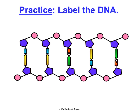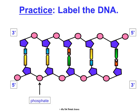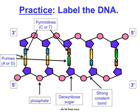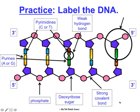Take a few minutes to label the DNA in your notes, then we'll go through it together. The 3' end has a sugar on it; the 5' end has a phosphate. The strong covalent bonds run along the backbone. The bigger nitrogen bases in the middle are purines — adenine and guanine. The smaller ones are pyrimidines — cytosine or thymine. They're held together by weak hydrogen bonds. One complete unit of phosphate, sugar, and nitrogen base is a nucleotide — the monomer of the nucleic acid.